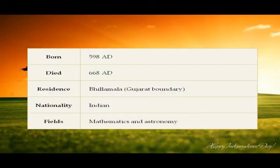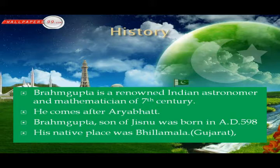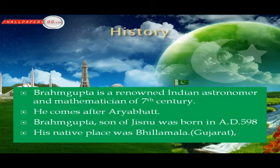Now I am going to teach about the contributions of Brahmagupta in mathematics. Brahmagupta is a renowned Indian astronomer and mathematician of the 7th century. He comes after Aryabhata. Brahmagupta, son of Jisno, was born in AD 598. His native place was Pilamala, an old name of modern Pinmar, a village in the modern boundary of Gujarat. He died in 668 AD.